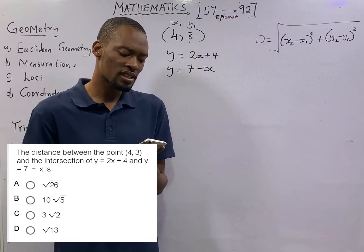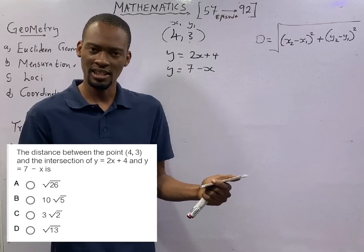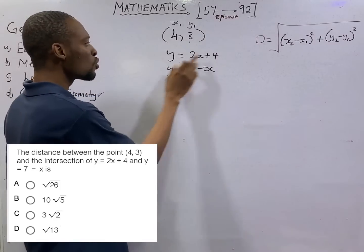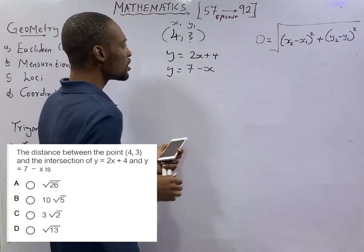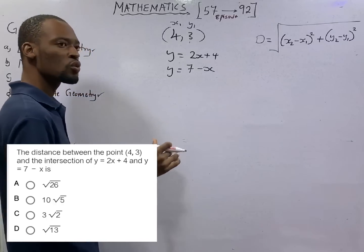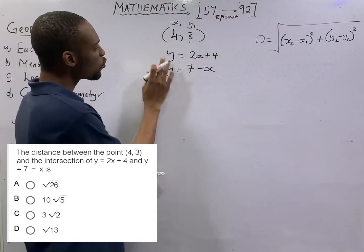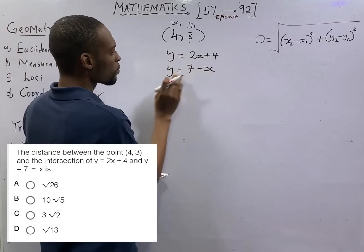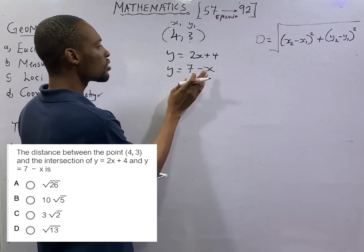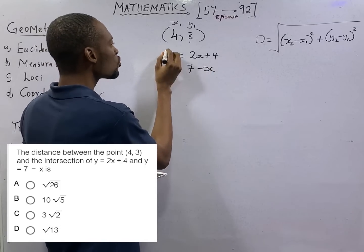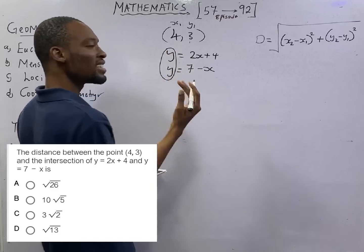Every time we are told that two lines intersect, like this equals this, this equals this, it means that they are both equal to each other. If y equals 2x plus 4 and this y equals 7 minus x, it means y equals y since they intersect.